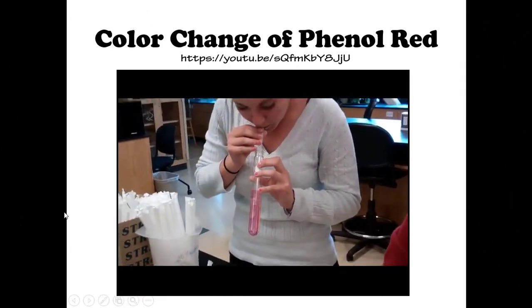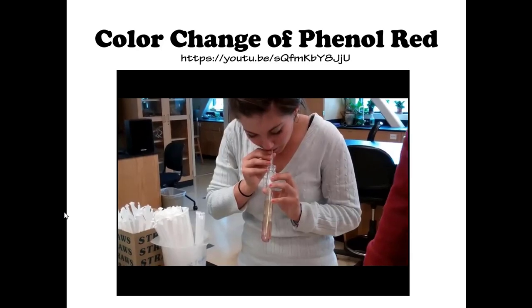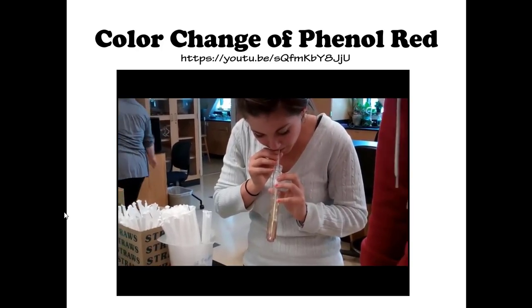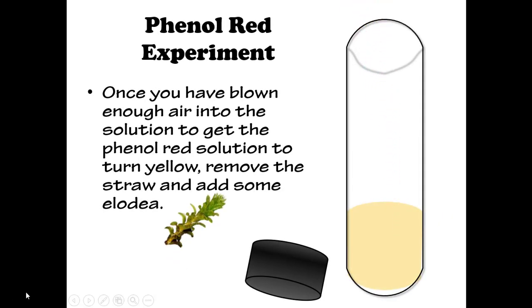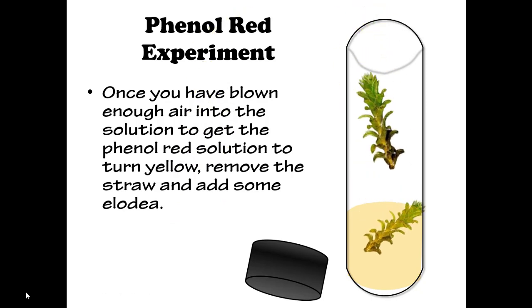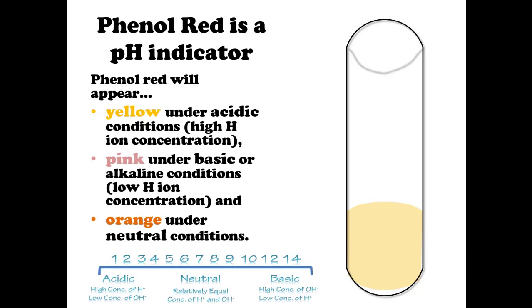Here is a demonstration of the color change of phenol red. Once you have blown enough air into the solution to get the phenol red to turn yellow, remove the straw and add some Elodea. Phenol red will appear yellow under acidic conditions, pink under basic or alkaline conditions, and orange under neutral conditions — neutral being a pH of around 7.0.